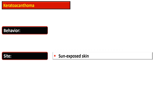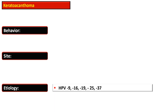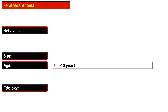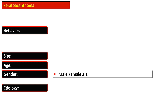The site of this lesion is usually sun-exposed skin. Etiologically, human papilloma virus types 9, 16, 19, 25, and 37 have been linked with this etiology. Ultraviolet rays and chemical carcinogens such as pitch and tar are also attributed to this. The age of onset is more than 40 years.